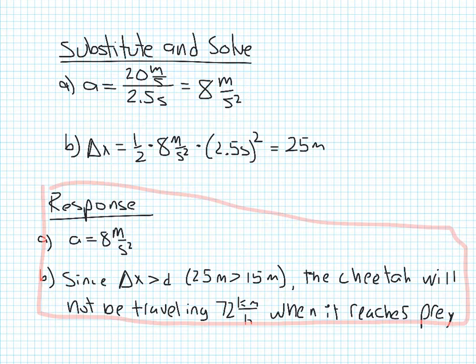But the second thing is we need to interpret what we found out about this 25 meters here. Now keep in mind, this delta x represented how far it took to reach the 72 kilometers per hour. So since we noticed that this delta x is greater than the distance of the prey,